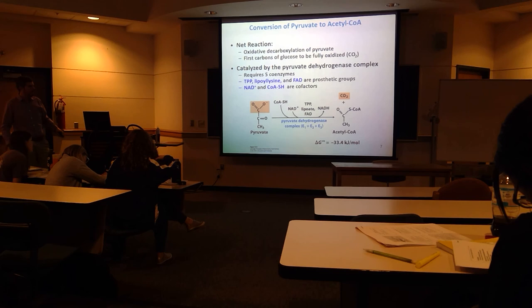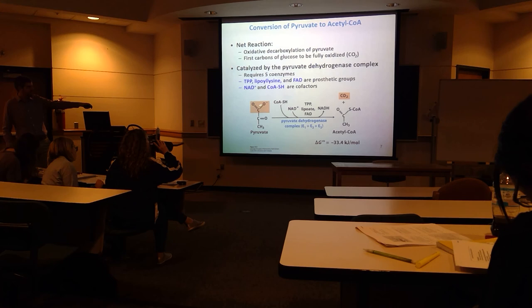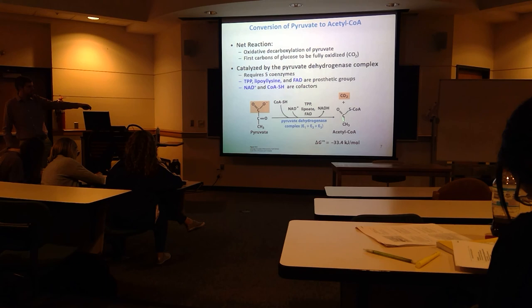Pyruvate enters E1 and reacts, gets transferred to E2, acetyl-CoA leaves from E2, and E3 is involved with regenerating the complex back to its reactive state. There are many cofactors and prosthetic groups involved: coenzyme A, NAD+/NADH, FAD, TPP, and lipoate — but don't lose track that the overall result is pyruvate to acetyl-CoA.